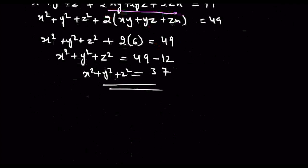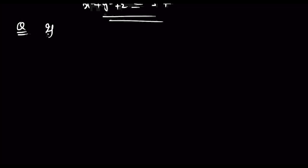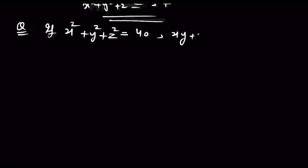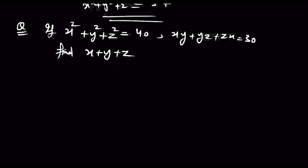अब देखिए एक और question है हमारे पास। इसमें दिया है: if x square plus y square plus z square equal to 40, and xy plus yz plus zx equal to 30 given है। इसमें हमको find करना है x plus y plus z।